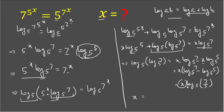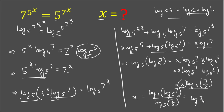To find the value of x, we divide both sides: x equals log base 5 of 7 divided by log base 5 of (7/5). Calculating these values, the answer is approximately 0.5642.